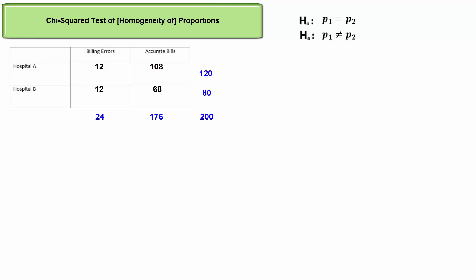The observed sample counts are shown. We need the expected counts for each of the four cells. Here's the formula. We should show the work. The expected count in any cell is its row total times its column total divided by the combined total. Expected billing errors at hospital A is 120 times 24 divided by 200.